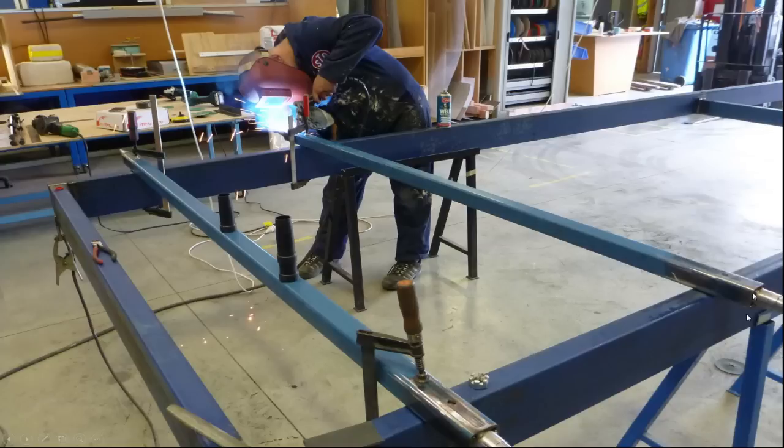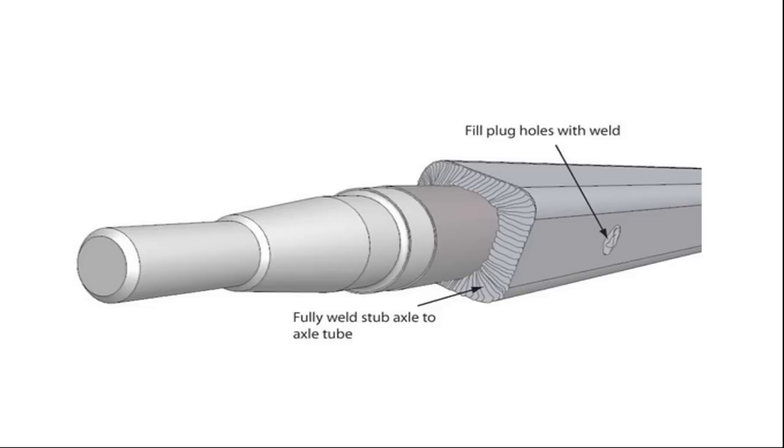As you can see down in this region. And once tack welded, we need to fill the plug holes created earlier here. And then also we need an excellent penetrating weld around the stub, as you can see in this illustration here.